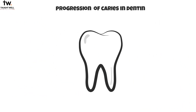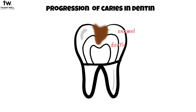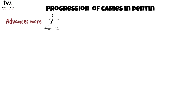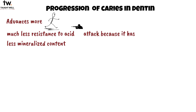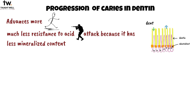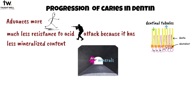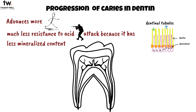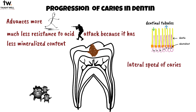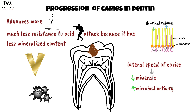Dental caries advances more rapidly in dentin than in enamel because dentin has less mineralized content and provides less resistance to acid attack. Dentin possesses microscopic tubules that act as tunnels providing a pathway for bacteria to enter and for minerals to exit. When enamel demineralization advances to the dentino-enamel junction (DEJ), rapid lateral expansion of the caries lesion may occur due to bacterial contamination. This is why dentinal caries looks V-shaped in cross section, with a wide base at the DEJ and the apex directed pulpally.